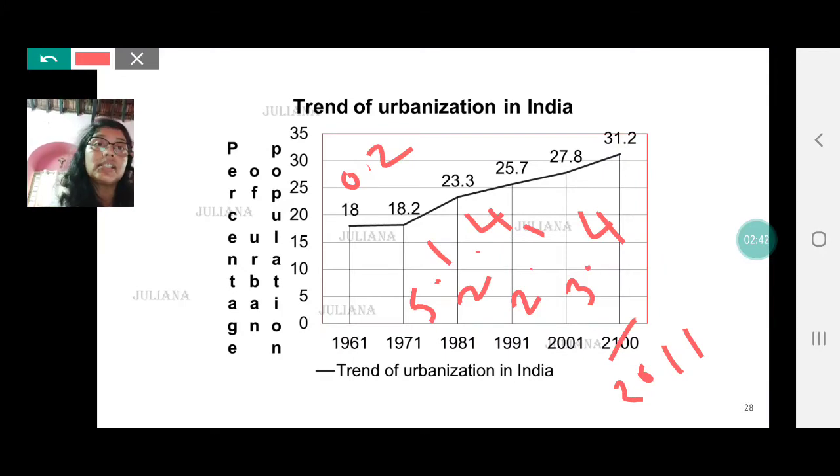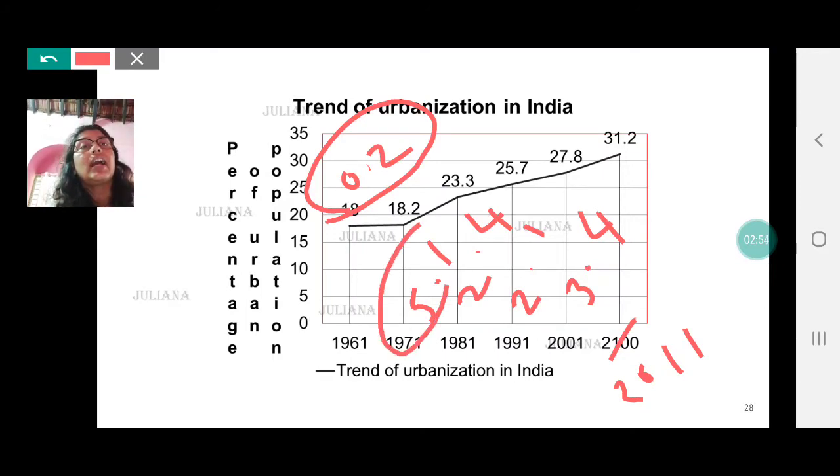Between the year 1961 to 71 there was a very slow growth in the urban population. Then between the year 1971 to 1981 there was a very high growth rate in urban population, that was 5.1 percent. What could be the reasons? Industrialization, development facilities, infrastructure, etc.